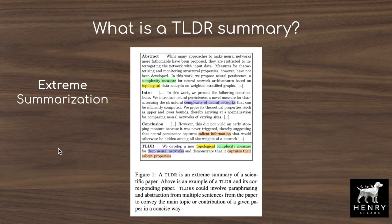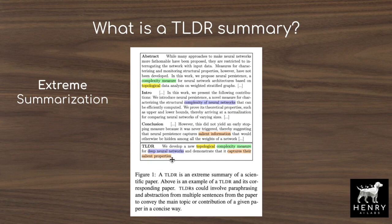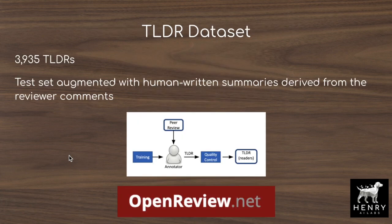A too-long-didn't-read summary is an example of extreme summarization, where we have an entire 8 to 10-page machine learning research paper and we're trying to summarize it into one sentence, such as: 'We develop a new topological complexity measure for deep neural networks and demonstrate that it captures their salient properties.' This one sentence captures the idea that there is some new measure introduced in the paper, and then experiments demonstrate that it does this kind of thing. These summaries are used to help people gauge their interest in a paper and decide whether it relates to their own research.